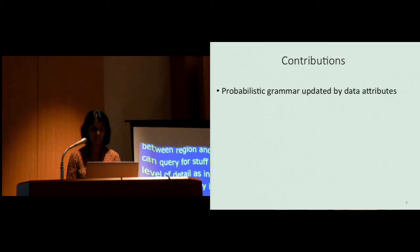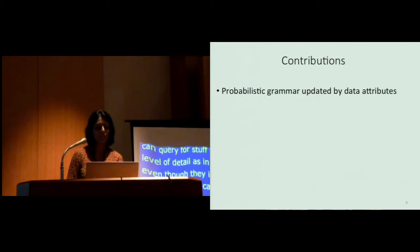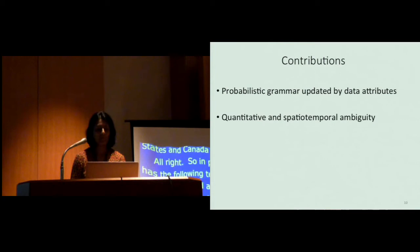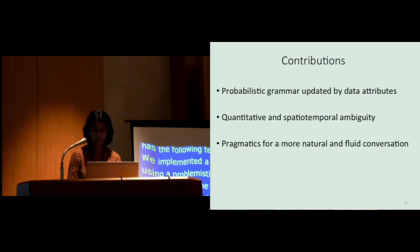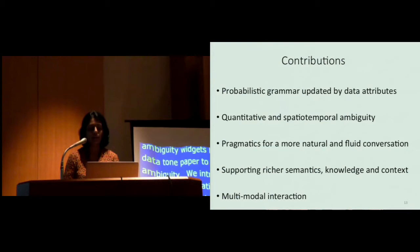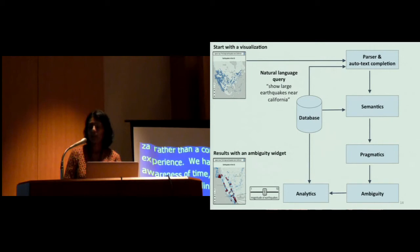So in particular, our work has the following technical contributions. We implemented a custom parser that uses a probabilistic grammar approach with predefined rules that are further refined using data attributes from the visualization. We extend the ambiguity widgets introduced by the data tone paper to other forms of ambiguity, such as quantitative and spatiotemporal reasoning. We introduced the notion of language pragmatics to enable more conversational interaction with the visor rather than a command-like experience. We have built-in domain awareness of time, geographic, and quantitative reasoning by linking to existing knowledge bases. And lastly, we believe that natural language input should work well with other modalities that people often use in analysis, such as mouse interaction. So here's an overview of the system, and I'll be discussing each of these modules in brief in the interest of time, but refer to the paper for more details.